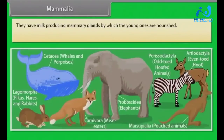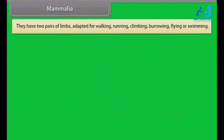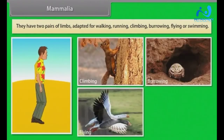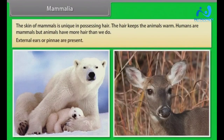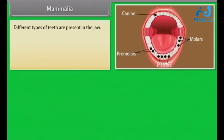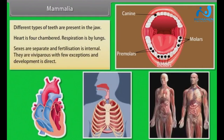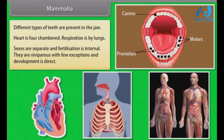Mammals have milk-producing mammary glands by which the young ones are nourished. They are homeothermous, that is warm-blooded. They have two pairs of limbs, adapted for walking, running, climbing, burrowing, flying or swimming. The skin of mammals is unique in possessing hair, which keeps the animals warm. External ears or pinnae are present. Different types of teeth are present in the jaw. Heart is four-chambered. Respiration is by lungs. Sexes are separate and fertilization is internal. They are viviparous with few exceptions and development is direct.